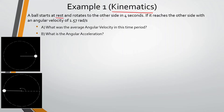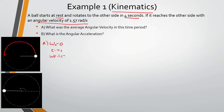A ball starts at rest and rotates to the other side in four seconds. If it reaches the other side with an angular velocity of 1.57 radians per second, what was the average angular velocity in this time period? So this ball is rotating to the other side in four seconds. Let's write down everything we know: angular initial velocity is zero, time is four seconds, final angular velocity is 1.57 radians per second. The angular displacement — all the way around is 2π, so half the way around is π radians.